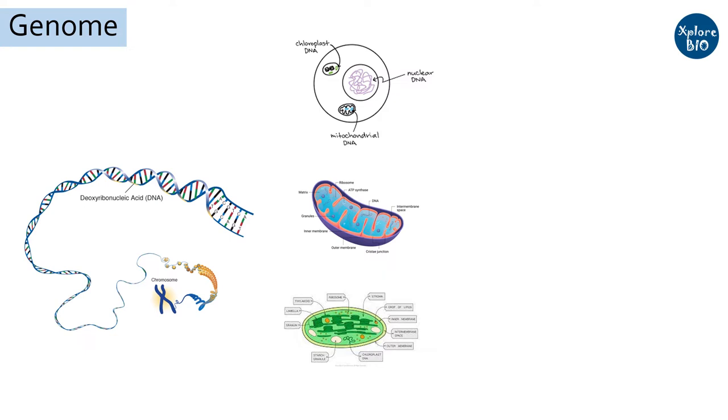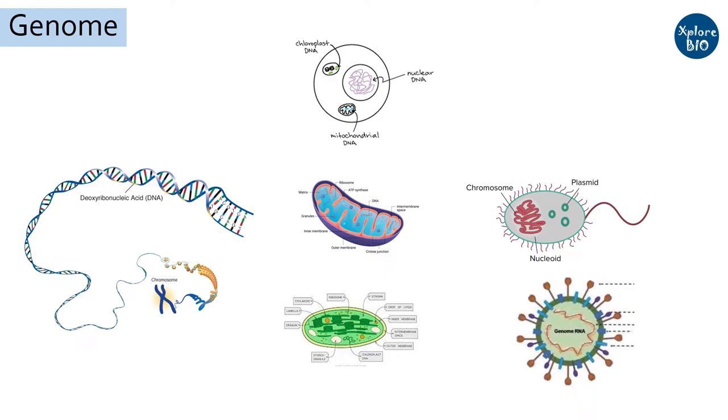In prokaryotes, the genome is smaller and exists in the cytoplasm of the cell. Prokaryotes may have additional genomes, for example the plasmids. Organisms like viruses can have RNA as a genome.